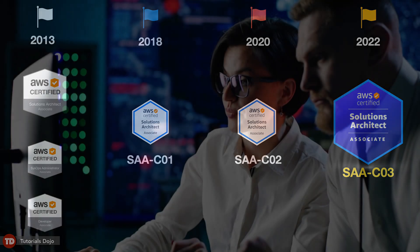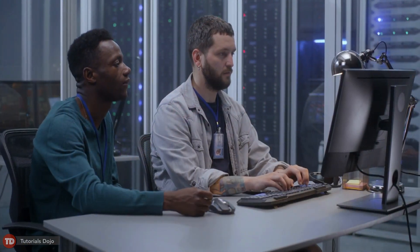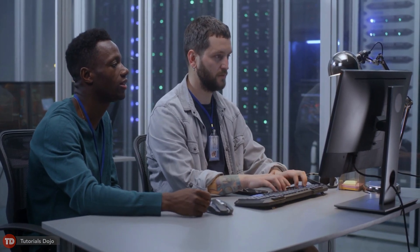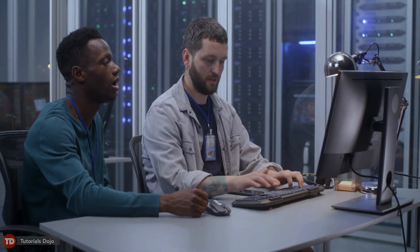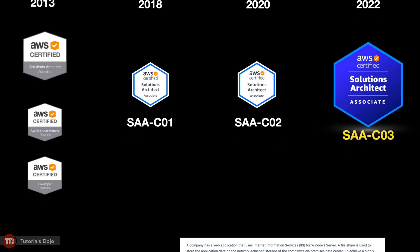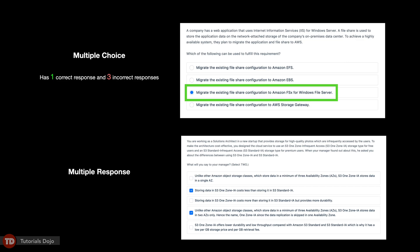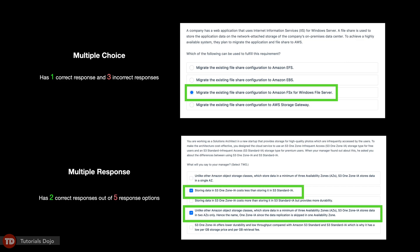The AWS Certified Solutions Architect Associate exam is intended for IT professionals who perform a solutions architect or DevOps role and have substantial hands-on experience designing available, cost-efficient, fault-tolerant, and scalable distributed systems on the AWS platform. It is composed of scenario-based questions that can either be in multiple-choice or multiple-response formats. The first question type has one correct answer and three incorrect responses, while the latter has two or more correct responses out of five or more options.